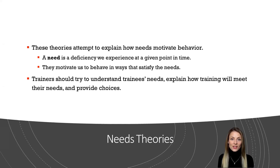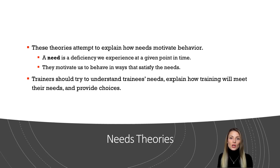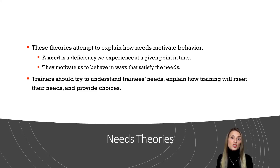There are several needs theories that attempt to explain motivation. Collectively, these theories suggest that the deficiencies or needs that we experience motivate us to behave in certain ways — in ways that satisfy these needs. Examples of needs include achievement, self-fulfillment, power, and affiliation. These theories also suggest that people vary in their needs and that different situations trigger different needs.